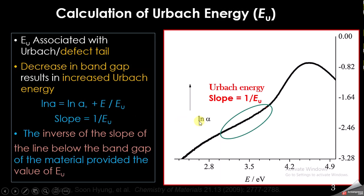From this kind of graph, we can calculate the Urbach energy from the slope. The data — the values of ln(α) and energy — are obtained from the electronic absorption spectrum of the semiconductor oxide material.